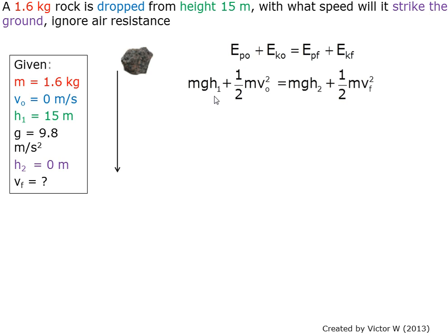This formula can be further expanded into this format. Since the rock's initial velocity is 0, the rock's initial kinetic energy is also 0.